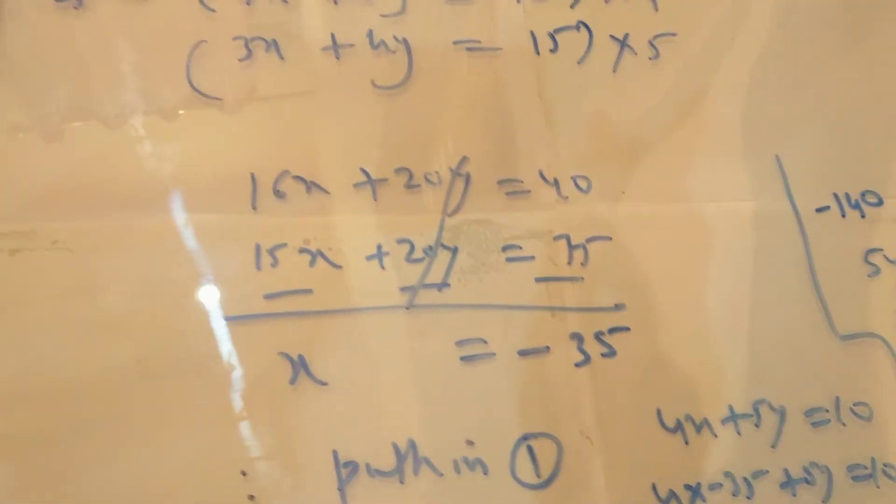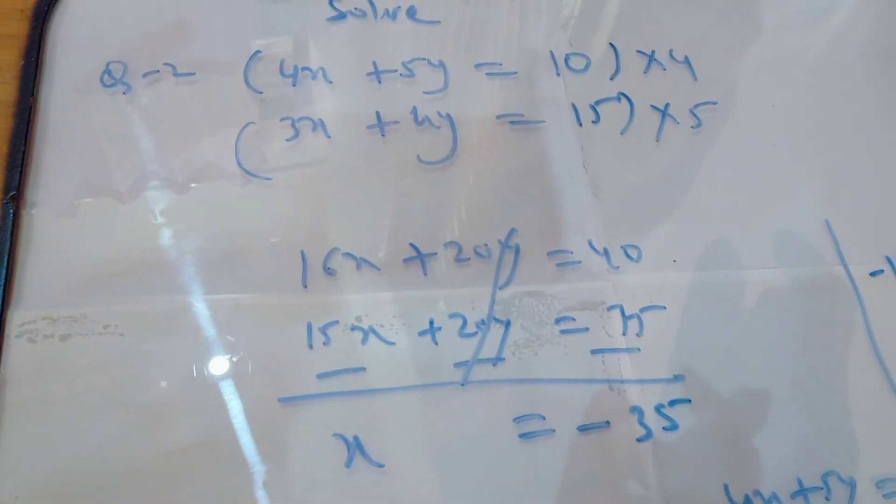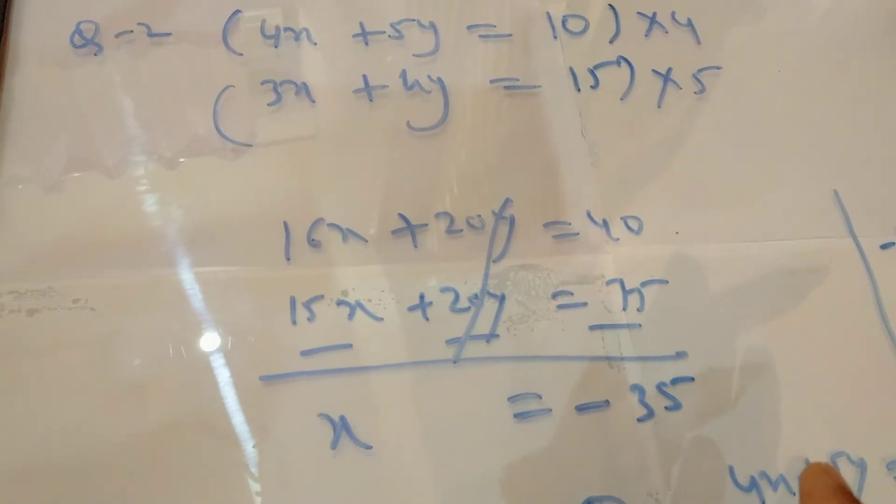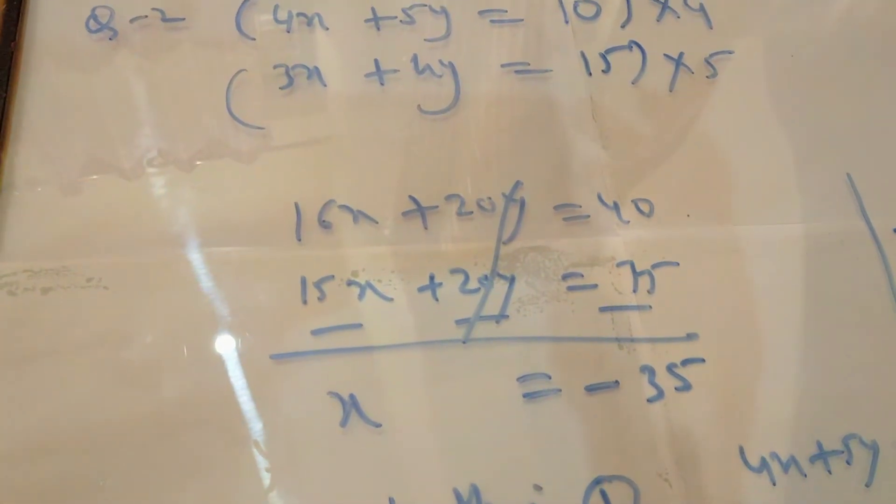So this is the right answer: y equals 30 and x equals minus 35. This method is called elimination method. Students, take help from these two examples and try to solve exercise number 5.2. Thank you very much.